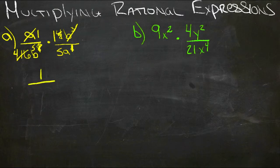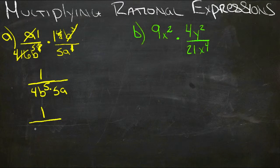So we have 1 over 4b to the fifth times 5a. So that gives us 4 times 5, which is 20, b to the fifth times a. So on the numerator we keep our 1. We have 20ab to the fifth.